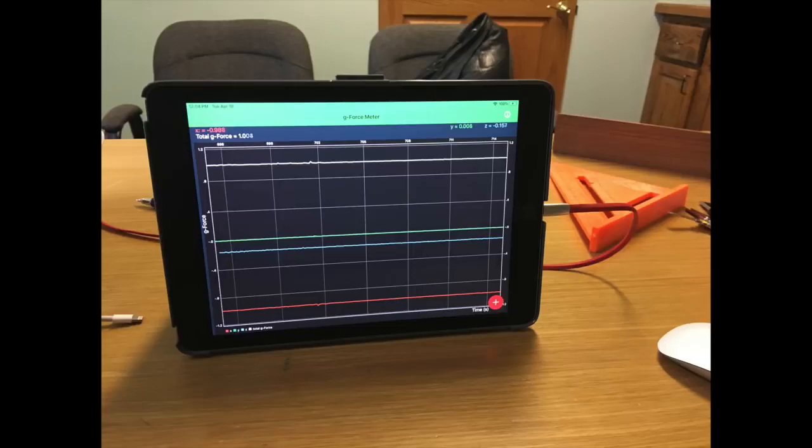The x-axis goes along the short edge here. Now, the z-axis goes from the front of the iPad to the back. Let's have a look and see what that means.